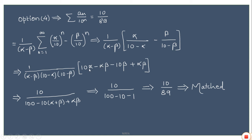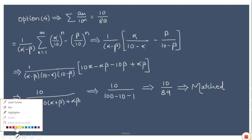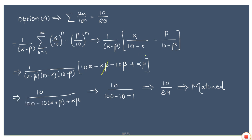After cross-multiplication, the αβ terms cancel, and from the remaining terms 10 can be factored out, with (α - β) canceling the denominator factor. The numerator becomes 10 and the denominator is (10 - α)(10 - β) = 100 - 10(α + β) + αβ = 100 - 10 - 1 = 89. So the answer is 10/89, which matches the given answer. Therefore, among the four options, only option 3 is wrong; options 1, 2, and 4 are all correct.